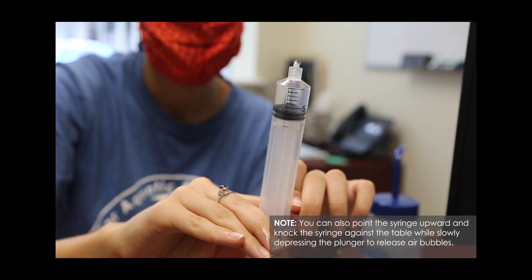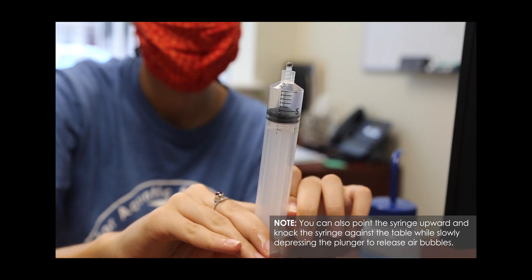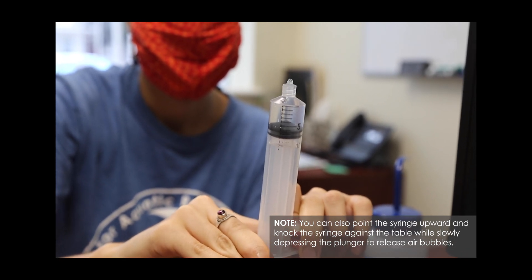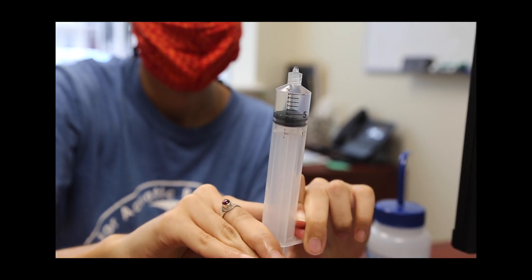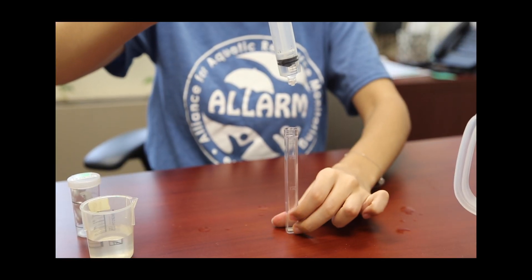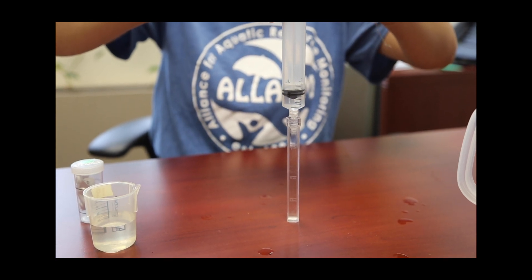Do this over your liquid waste container. Do not return excess water into the original sample collection bottle to avoid contamination of any kind. You can now transfer the water from your syringe into your test tube.